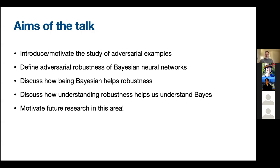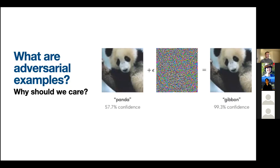An adversarial example is a test input that has been slightly manipulated to force some kind of bad behavior — in this case, a misclassification. We have two images: one is a panda, and the other is almost identical except it's been changed by a small color perturbation in every pixel, causing it to be misclassified as a gibbon, which is a kind of monkey. This bad behavior is something we can create for every test instance for state-of-the-art neural networks.